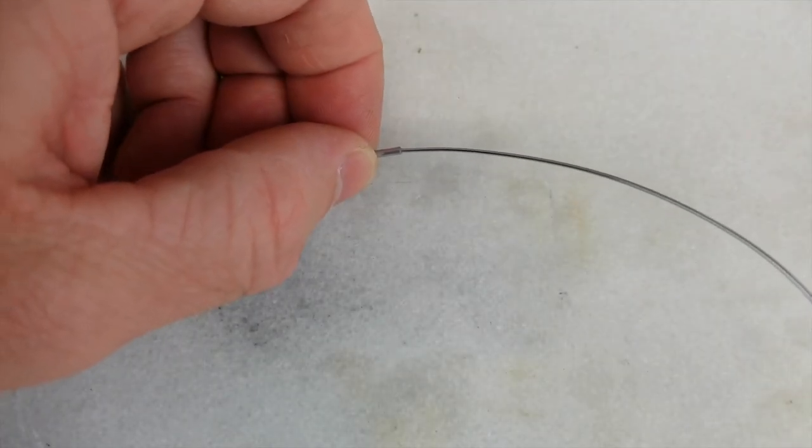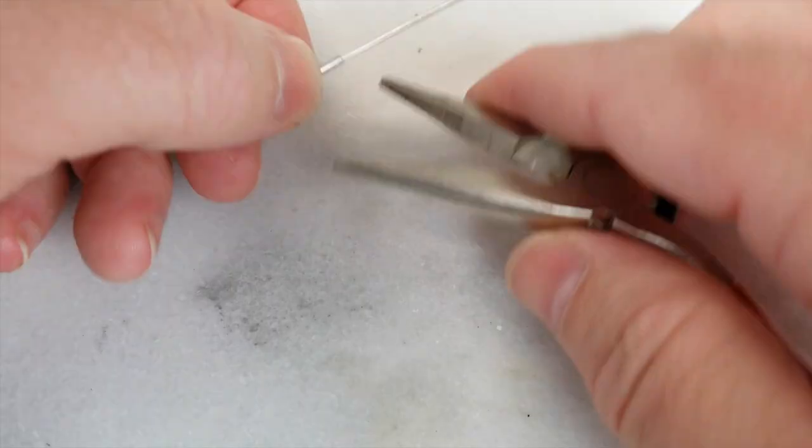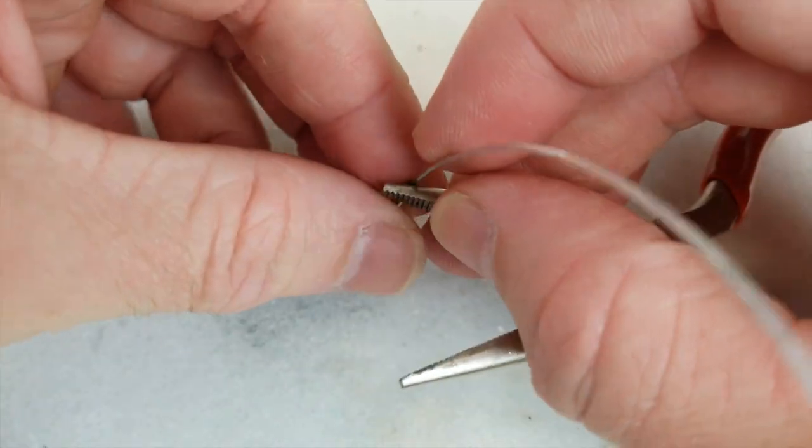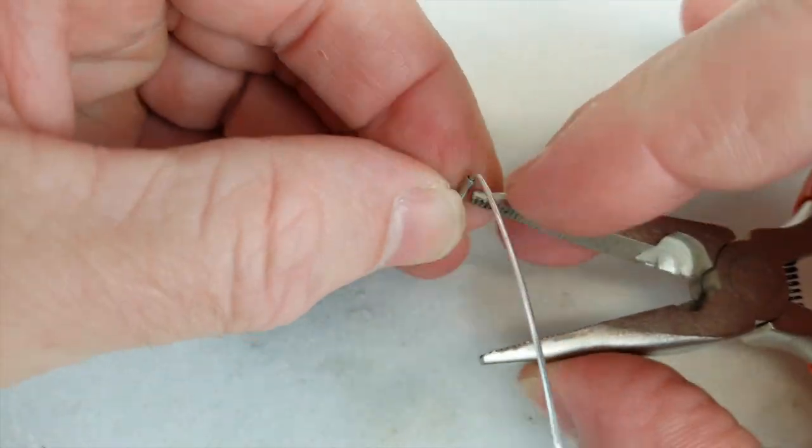Mark how far you want this to sit from the shock and snip it. Cap the bottom of the tube with a piece of MIG wire as well and once glued file down flush.